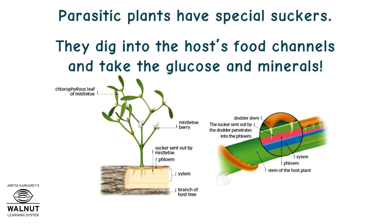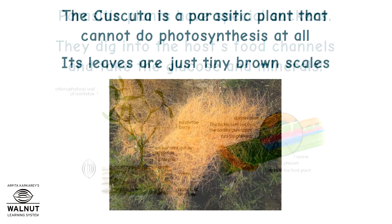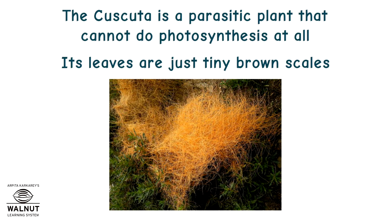Parasitic plants have special suckers. They dig into the host's food channels and take the glucose and minerals. The Cascuta is a parasitic plant that cannot do photosynthesis at all.